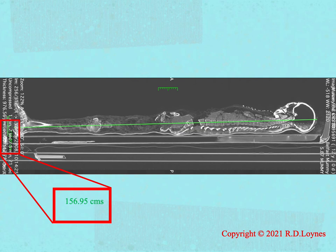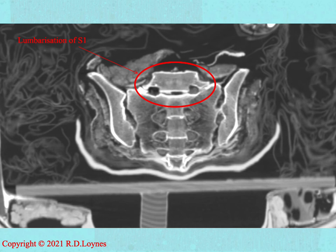Moving now to the subject of pathology — that is, disease or congenital abnormality. The first thing that becomes apparent is that the sacrum, normally formed by the fusion of five independent vertebral elements, exhibits a lack of fusion of the upper element. We call this lumbarisation of S1. It is found in about 2% of people, but rarely causes any symptoms, perhaps some backache.